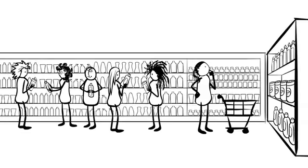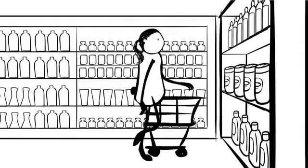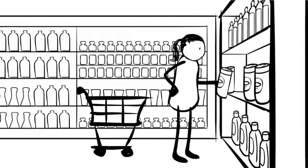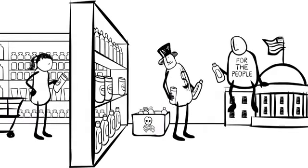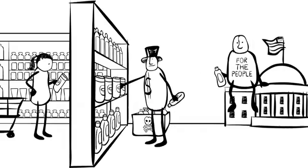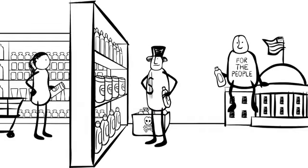It turns out the important decisions don't happen when I choose to take a product off the shelf. They happen when companies and governments decide what products should go on the shelves. So who are these companies?